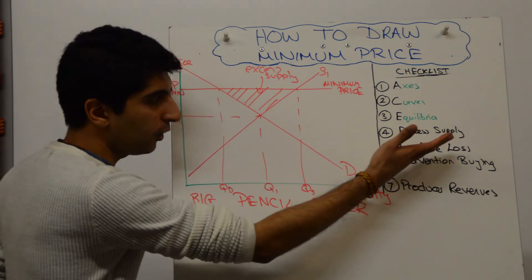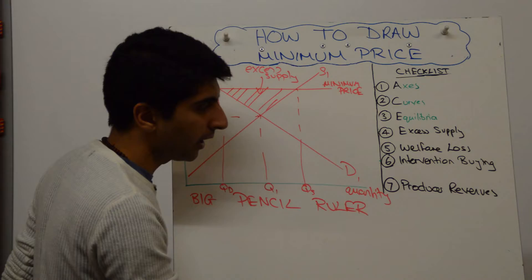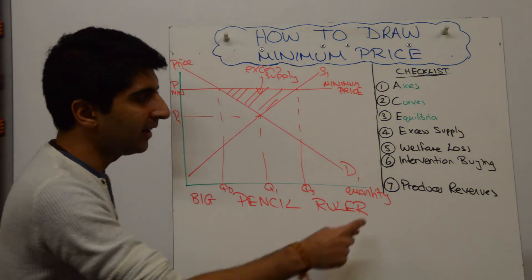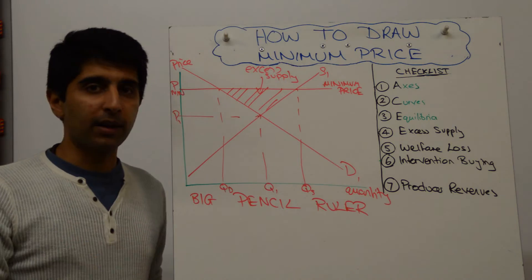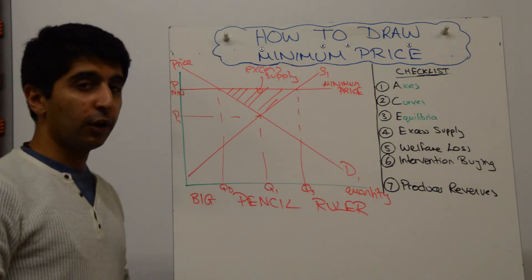We also want to be showing the welfare loss. If we're in a primary commodity market here, we want to be showing intervention buying and then the impact on producer revenues. If this is the market for alcohol or something like that, number six and seven are not going to be that relevant to you. So we've done the excess supply. That's fine.